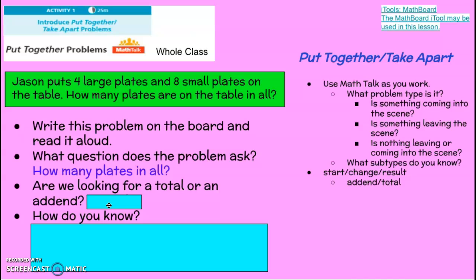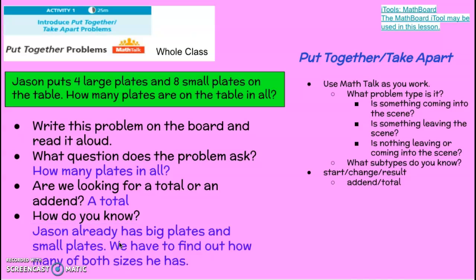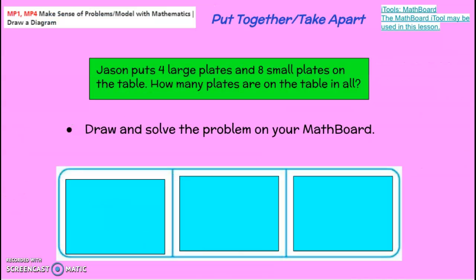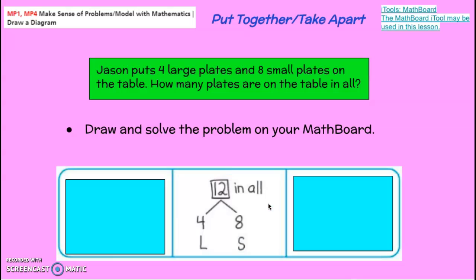Let's think about that. Jason puts four large and eight small plates on the table. Yeah — a total. How do you know? Well, Jason already has big plates and small plates, and we have to find out how many of both sizes he has. So now you need to use your whiteboard or piece of paper and think about the steps: drawing, equation, answer, label. I'm going to show you the drawing first.